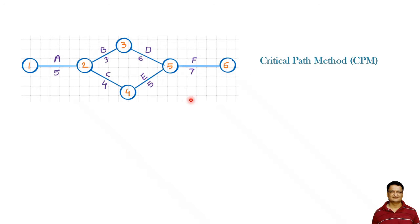Now let us see the meaning of these two with an example. In Critical Path Method (CPM), we have this kind of network diagram with certain activities.